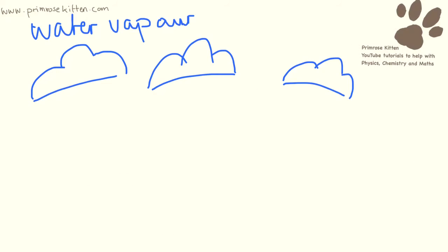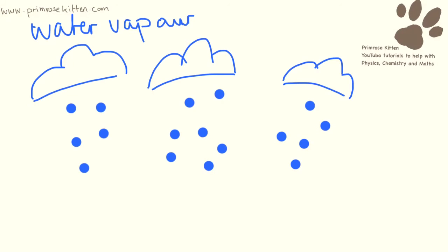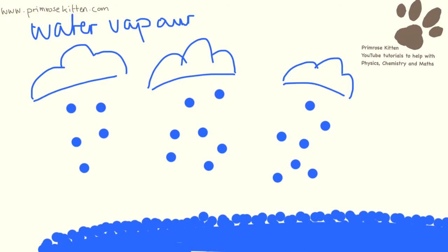The water vapour that was in the atmosphere eventually turned into clouds, and then these clouds started raining. As the rain built up, eventually the oceans were formed, the rivers were formed, the streams were formed. The water vapour wasn't vapour anymore — it was liquid water.